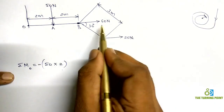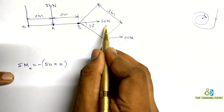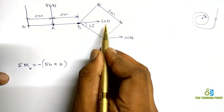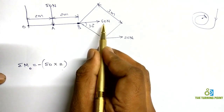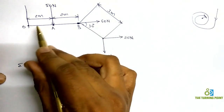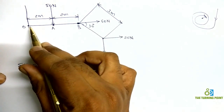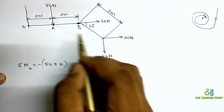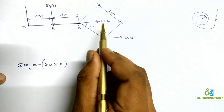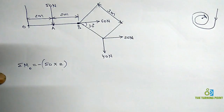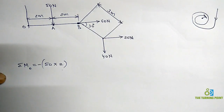The next force is 60 Newtons. The 60 Newton force's line of action is passing through point O, which means the moment because of that force will be 0. So there is no need to calculate the moment for that force.